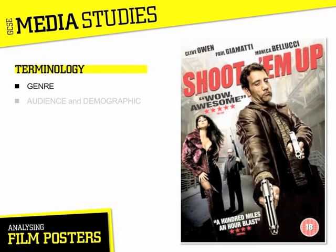The next two terms are audience and demographic. The poster is a type of media text, and we all read media texts when we look at them, making us the audience. So audience refers to anyone looking at the poster, making them a potential customer. Demographic means the section of this audience which the film is specifically aimed at.